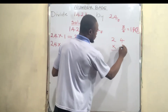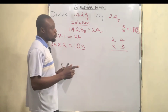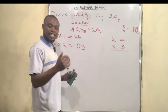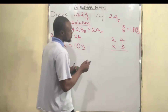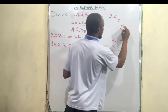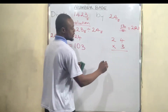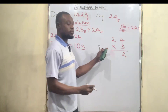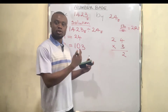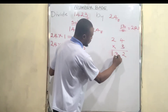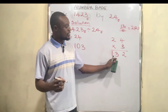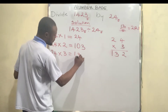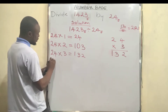Now 24 multiplied by 3: four times three gives us 12. What is 12 in base 5? Twelve in base 5 is two remainder two, so we write 2 and carry 2. Then three times two is six, plus the carried 2 is eight. Eight in base 5 is one remainder three. So 24 base 5 multiplied by 3 is 1132 — I mean 132 base 5.